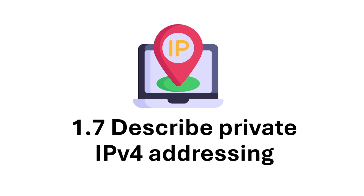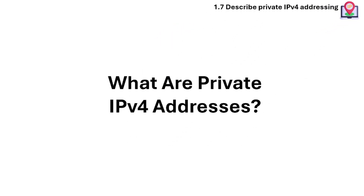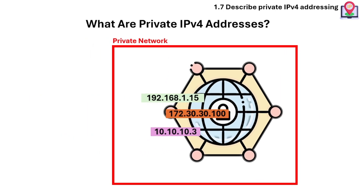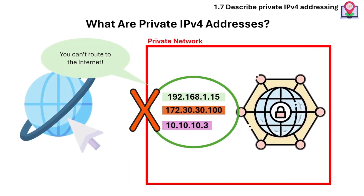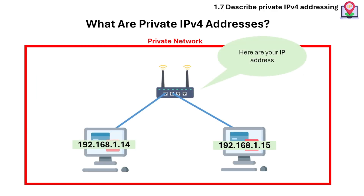Section 1.7 is about private IPv4 addressing and also includes NAT, or Network Address Translation. Private IPv4 addresses are IP ranges reserved for internal use within a private network. These IPs can't be routed on the internet. They are assigned by a router to devices on a network, allowing them to communicate with each other within that network.